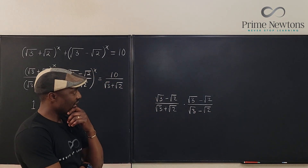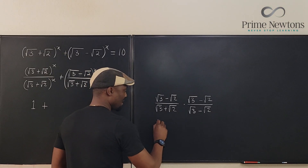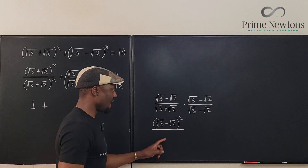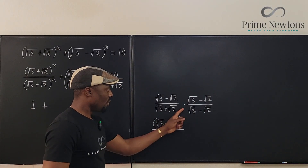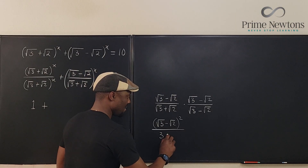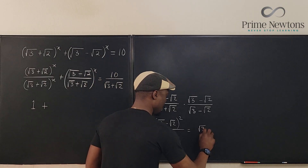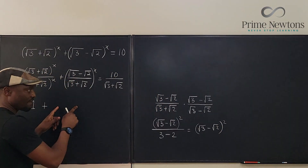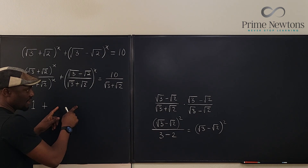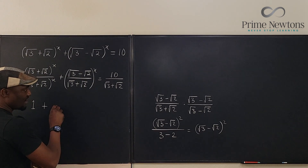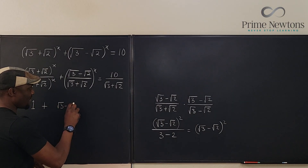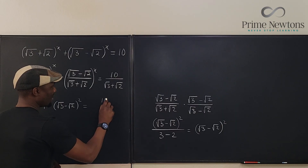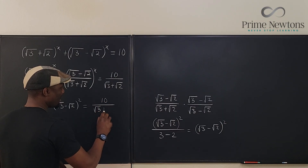On top we get (√3 − √2) squared, and on the bottom, multiplying out gives us 3 minus 2, which equals 1. So the answer for this part is just (√3 − √2) squared. This means the whole expression here becomes (√3 − √2) squared, and that equals 10 over (√3 + √2).